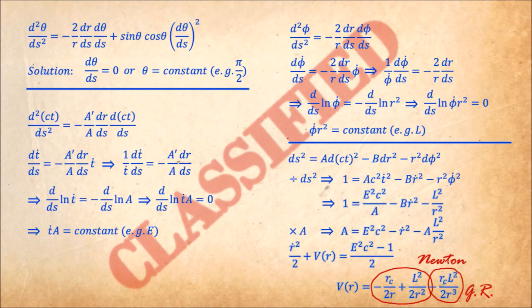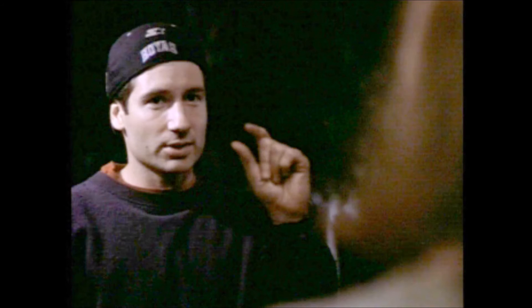For the orbit of Mercury, however, this term will be very small, which will allow us to use perturbation theory to calculate corrections to the perfectly elliptical Newtonian orbits. So in the end, we end up using perturbation methods just as Einstein did.